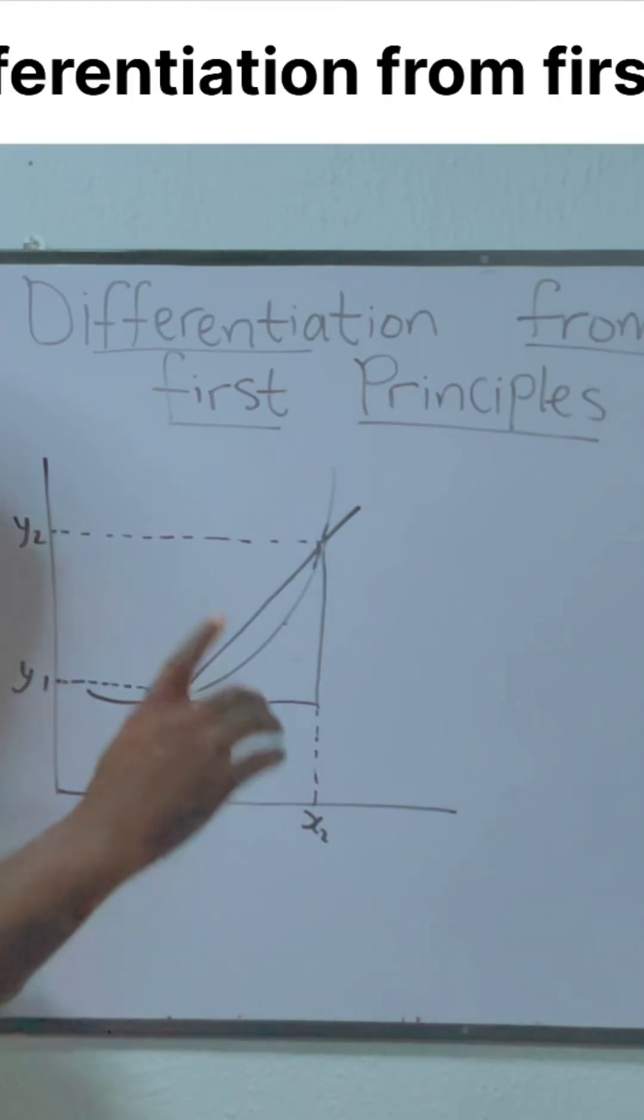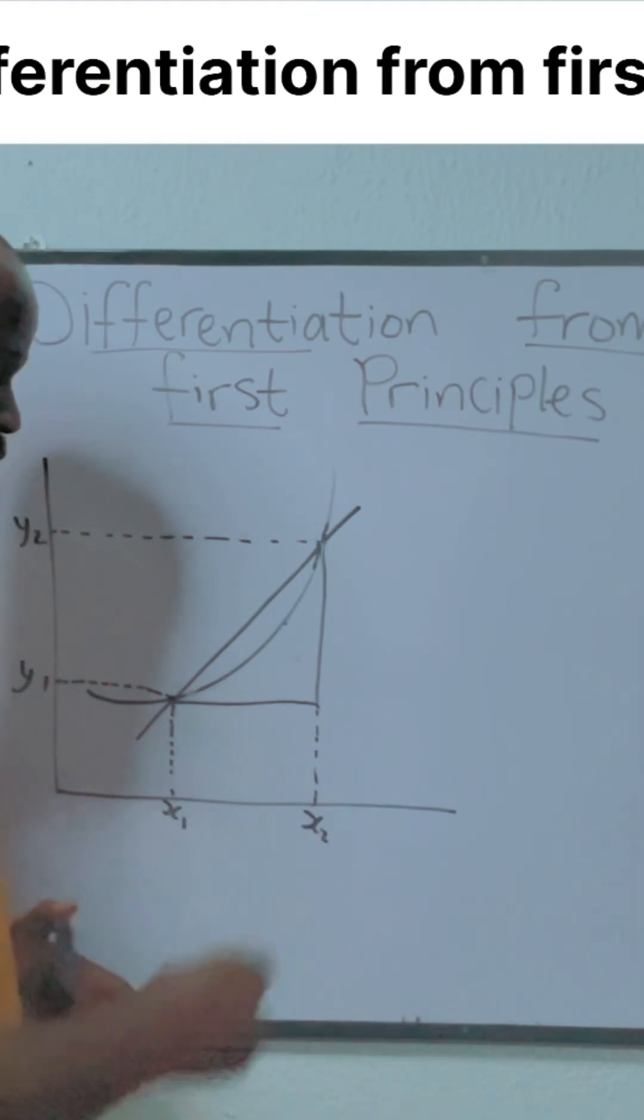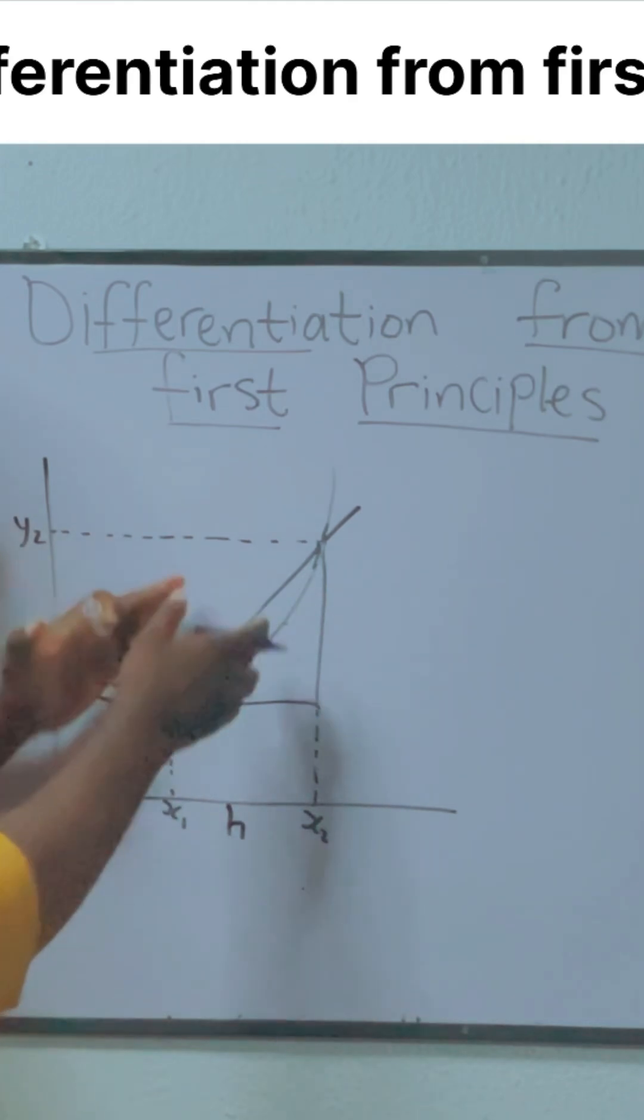Now if you traveled from x1 to x2, it means that you've walked a distance. Let's call that distance h. We're basically saying that the distance from x1 to x2, let's call it h.